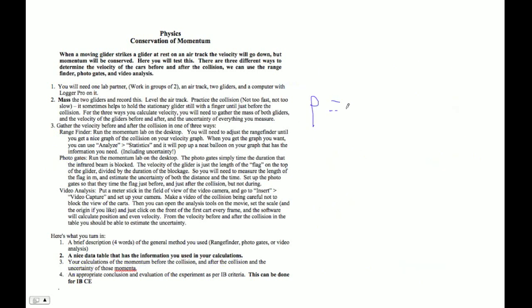But basically if momentum is mv, then the uncertainty of momentum over the momentum you calculated equals the uncertainty of mass over the mass plus the uncertainty of the velocity over the velocity.